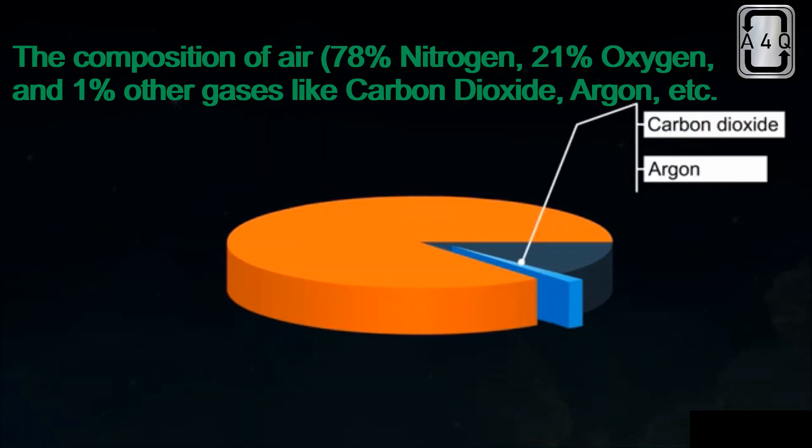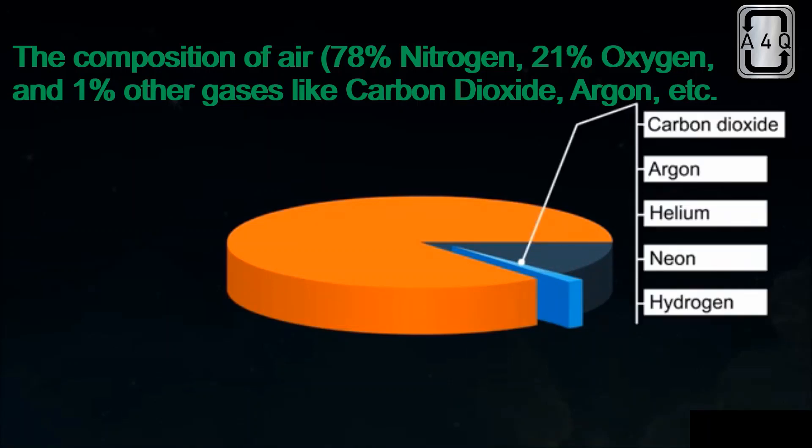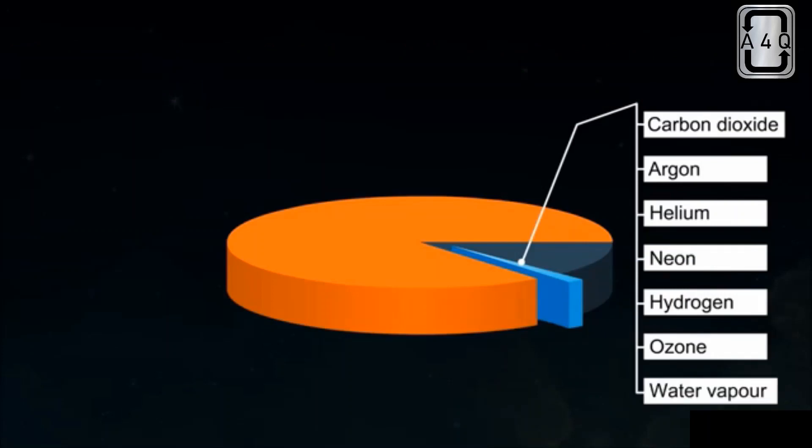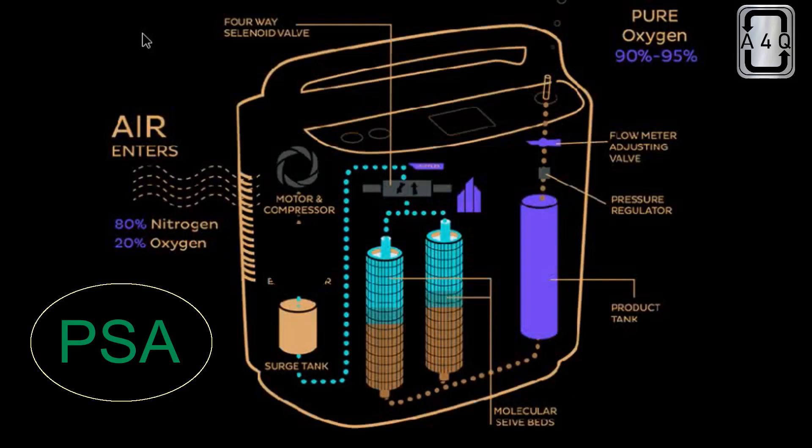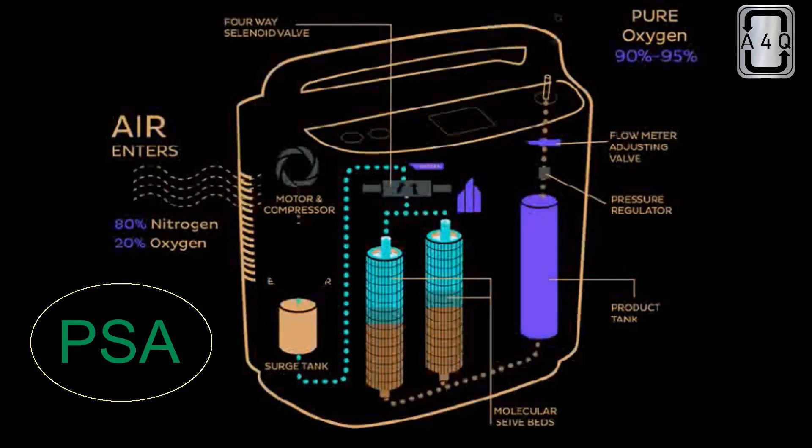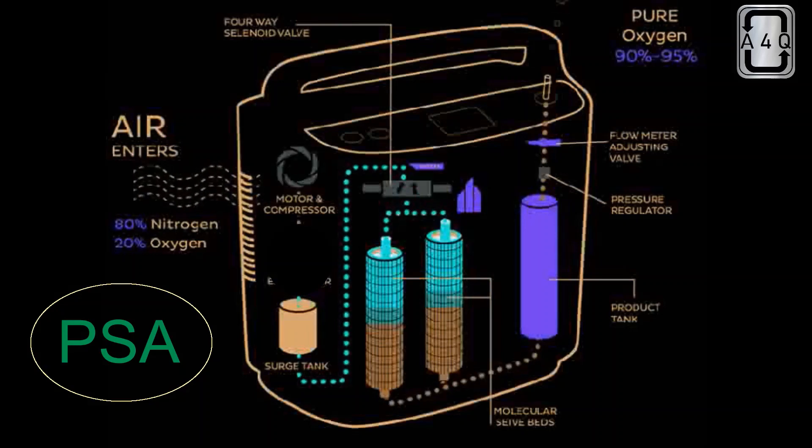If nitrogen is removed from the air, the primary gas remaining would be oxygen with a purity of about 90 to 95%. An oxygen concentrator uses this idea with the basic principle of pressure swing adsorption (PSA) to deliver 90 to 95% pure oxygen.